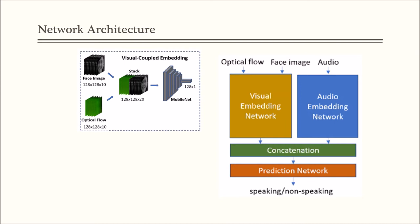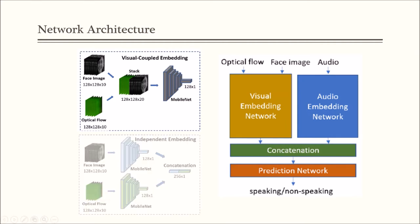The output of the last layer is a 128-dimensional visual embedding vector. For the independent embedding, we use two MobileNets with different weights to process input face images and optical flow, respectively. The output feature vectors from two embedding networks are concatenated as a visual embedding.